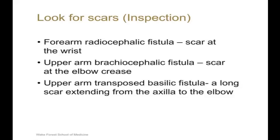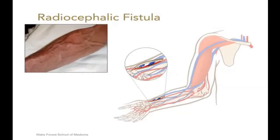Look for the surgical scar. The radiocephalic fistula, or forearm fistula, is created at the wrist and is the preferred first access. The upper arm fistula can be either brachycephalic or transposed basilic vein fistula. The brachycephalic fistula has a horizontal scar in the elbow crease, whereas the transposed basilic vein fistula has a long scar extending from the axilla to the elbow on the medial aspect of the arm. This slide shows the radiocephalic fistula, with the scar at the wrist and an end-to-side anastomosis between the forearm cephalic vein and the radial artery.